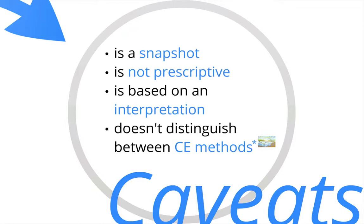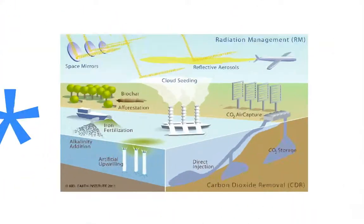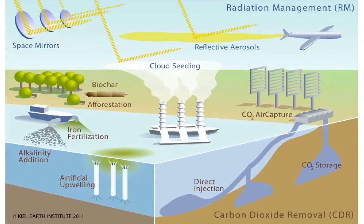The argument map is, in addition, based on an interpretation, and there might be other equally viable interpretations that draw a quite different picture of the debate. And finally, the argument map doesn't distinguish between different climate engineering methods. This means that not all arguments included in the argument map apply equally to all the different climate engineering proposals.